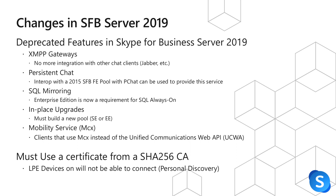We need to look at what has changed in Skype for Business Server 2019 to ensure the features still meet the needs of the business. First, let's look at what has been deprecated. One of the first things is XMPP gateways — there is no longer integration with other chat clients such as Cisco Jabber. Persistent chat has been removed; however, you can interoperate with a 2015 front-end pool and the persistent chat service, even if users are homed in the 2019 pool. SQL mirroring was also removed, so enterprise edition of SQL Server is now required for SQL Always On — you can no longer use SQL mirroring with standard edition SQL, which means additional licensing cost. Additionally, in-place upgrades have been removed.